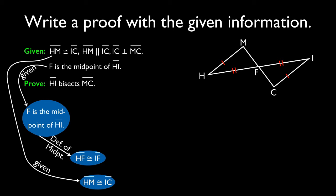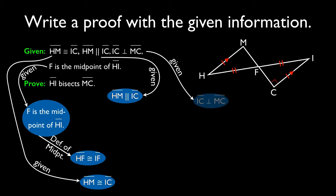Now a really quick thing here, I'm going to use that segment HM is parallel to segment IC. That's given. That's going to be important to us. I'm not sure why. And we're also given that IC is congruent to segment MC. Oh, I see what's happening here.